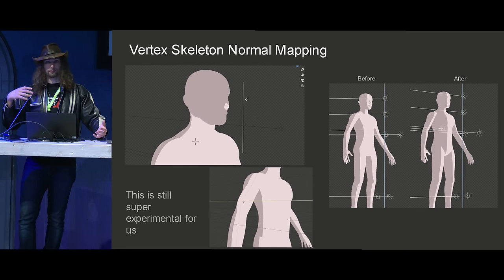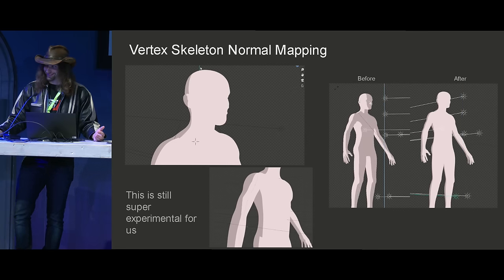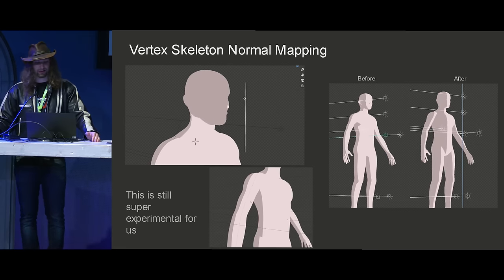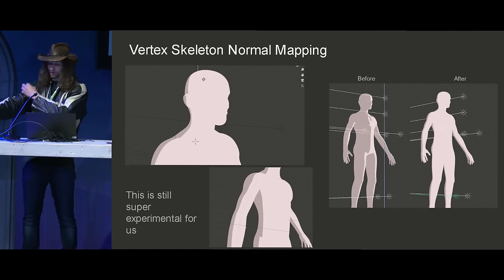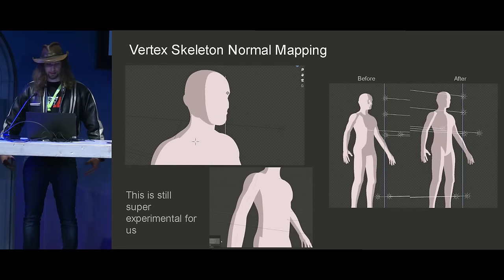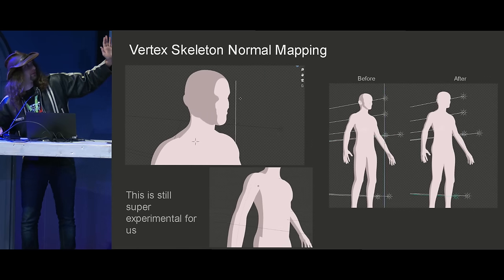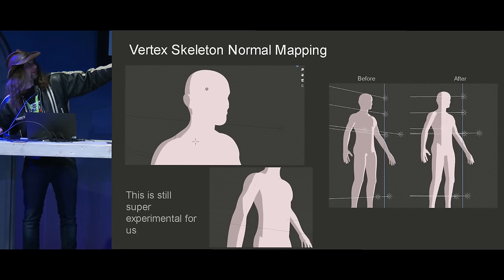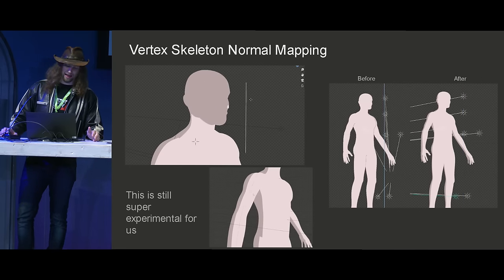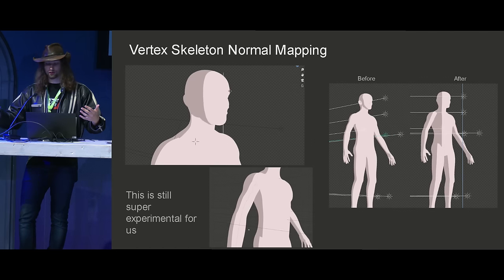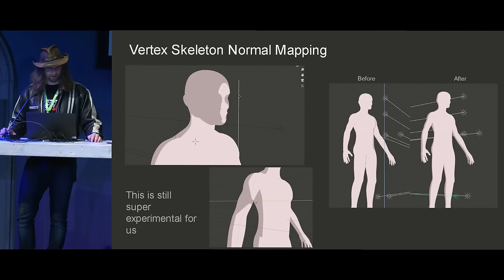Another method of doing this shadow control we're calling vertex skeleton normal mapping — patent pending, we need a new name. Thanks to Dylan Gu's team for pioneering this. It uses geometry nodes essentially to take the normals from a chain of vertices with no faces that go throughout the body, and it's basically just doing a cylinder projection onto every piece of the body from there. You can see in the after, you have really, really clean edges as the lights rotate around the body, as opposed to the kind of gloopy edges in the other one. This is still super experimental for us. I think it could be really useful to create LOD shadows in the future — that's why this is just a mannequin because we haven't actually implemented it.